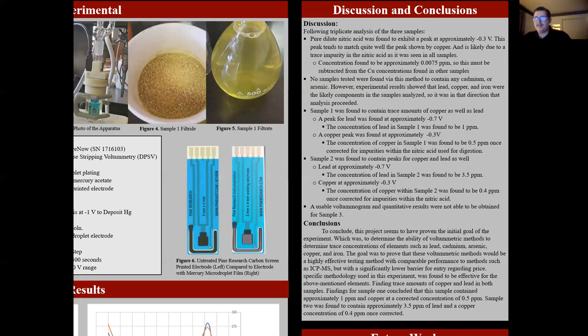The goal was to determine the ability of voltammetric methods to determine trace concentrations of metals in dog food. The goal was to prove that these methods would be a highly effective method comparable with other methods such as ICP-MS, but with a significantly lower barrier to entry regarding price. The specific methodology was found to be effective for the above mentioned elements, finding trace amounts of copper and lead in both samples.